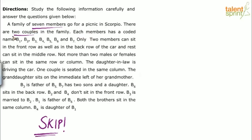Each member has a coded name B1 to B7. Only 2 members can sit in the front row as well as in the back row of the car, and the rest can sit in the middle row.